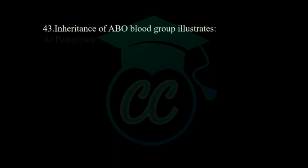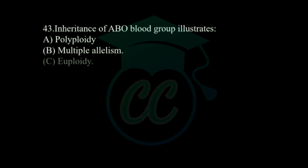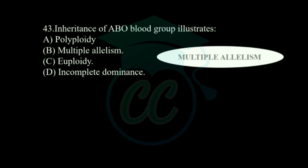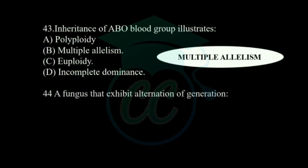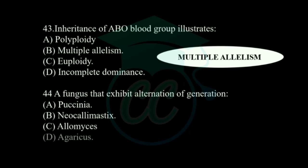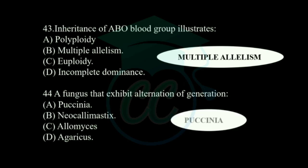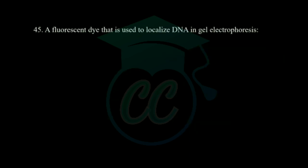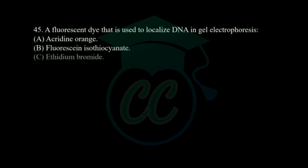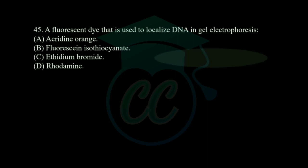Next question: which of the following is a tautonym? Options: Malus malus, Malus femelia, Pyrus malus, Malus domestica. The correct answer is Malus malus. Next question: inheritance of ABO blood groups illustrates — options: polyploidy, multiple allelism, euploidy, incomplete dominance. The answer is multiple allelism. Next question: a fungus which exhibits alternation of generations is — options: Paxina, Neocalimastyx, Allomyces, and Agaricus. The correct answer is Allomyces.